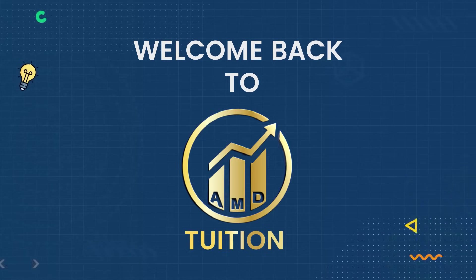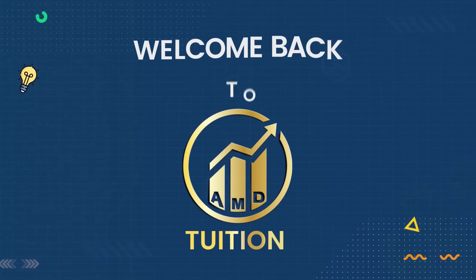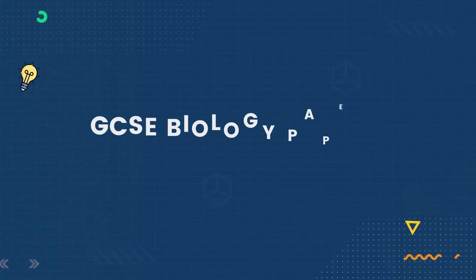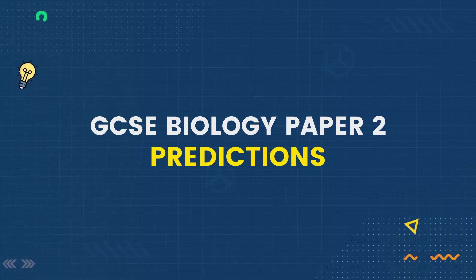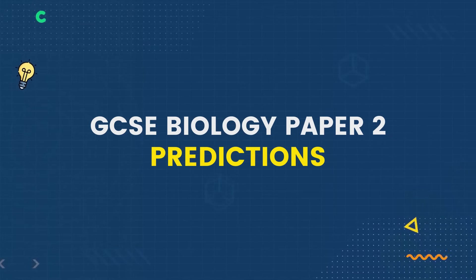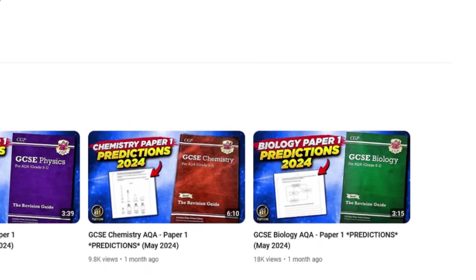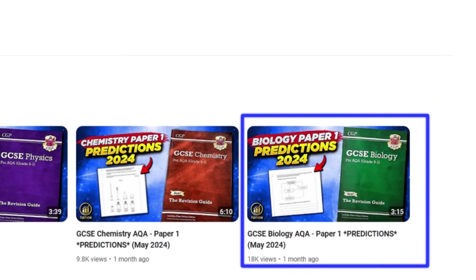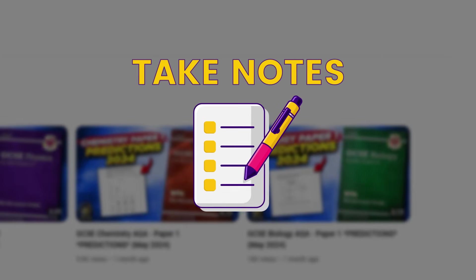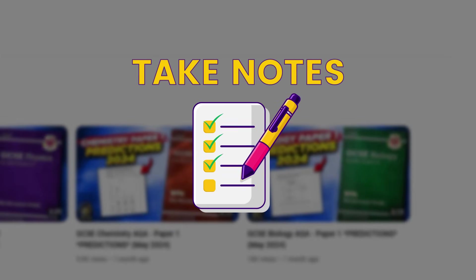Welcome back to AMD Tuzhen. In this video we'll be making predictions for this year's GCSE Biology Paper 2, which is coming up in just a few days from now. The predictions from the Paper 1 videos were pretty accurate, so it may be worth considering staying around till the end of this video and taking some notes on what we say.